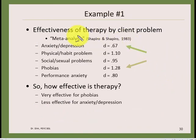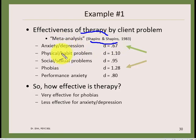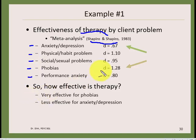An example: the effectiveness of therapy. If a friend wants therapy and asks how good a job it will do on average, there's a classic meta-analysis — a combination of many studies — that looked at how different kinds of therapy affected different conditions: anxiety and depression, physical habits, sexual problems, phobias, and performance anxiety. Anxiety and depression show a moderate effect (above 0.5), while phobias show a large effect.